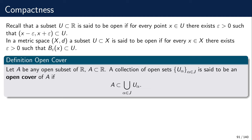Now we can define the super important notion of an open cover. An open cover is just a collection of open sets whose union contains the set A. Suppose A is any subset of the real line. We have a collection of sets — each set U_alpha in the collection is an open set in the real line. This collection is said to be an open cover for A if the union of all the sets in the collection covers the set A.